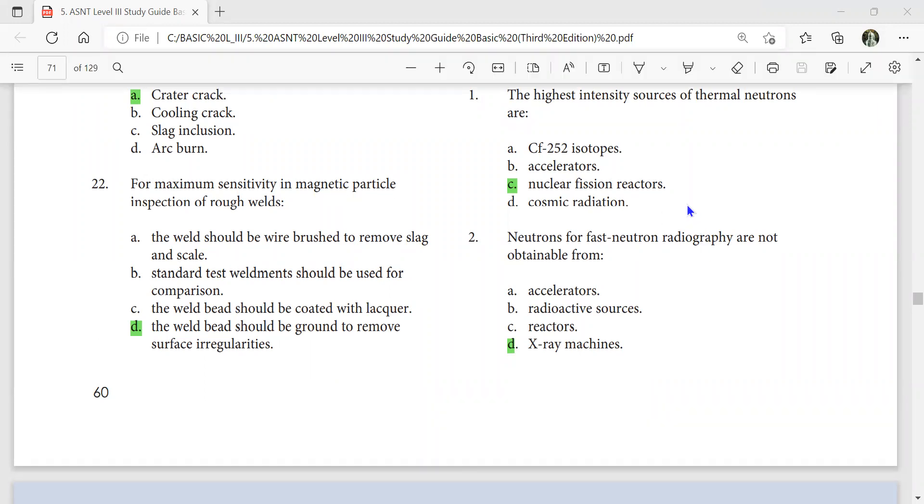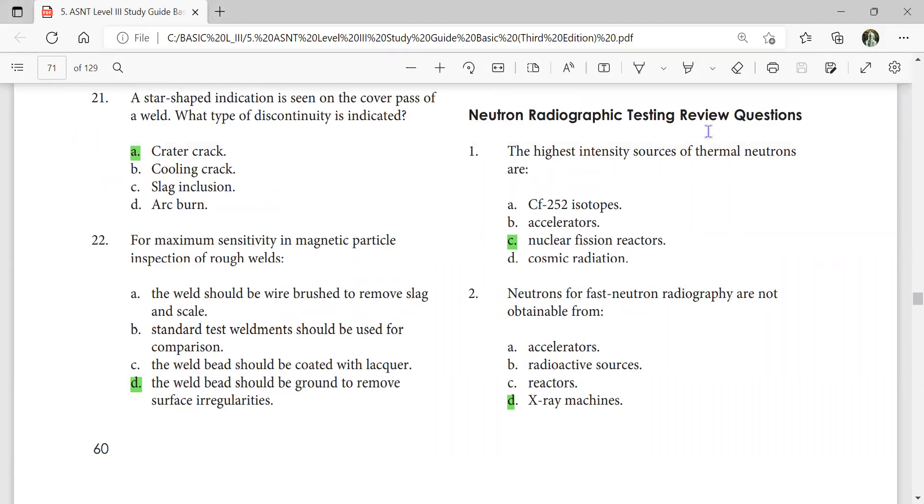Okay my dear friends, good morning. Let's restart today from neutron radiography. Neutron radiographic testing review questions for basic study guide. The highest intensity sources of thermal neutrons are nuclear fission reactors.